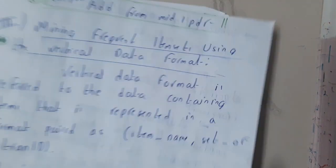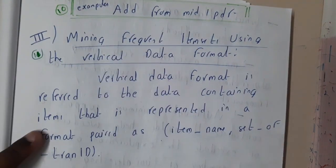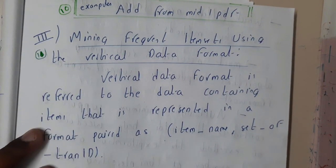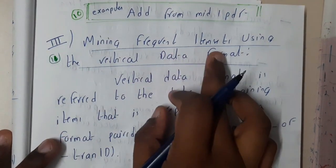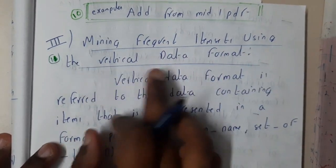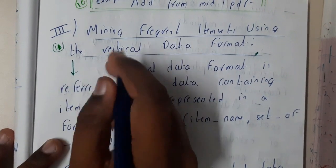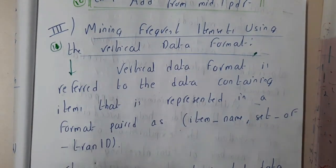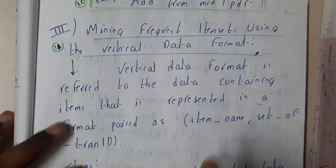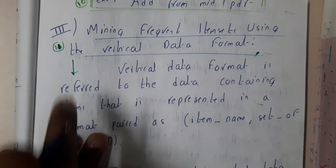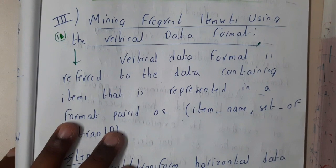In the next lecture we will be going through one more type of method, which is vertical data formatting — finding minimum frequent items using vertical data format instead of rows and columns. Once you go through the example you will have a clear idea. Let us meet in the next lecture and discuss it. Thank you for watching.